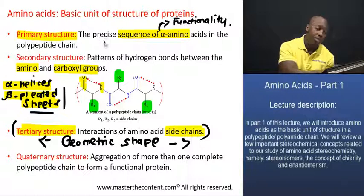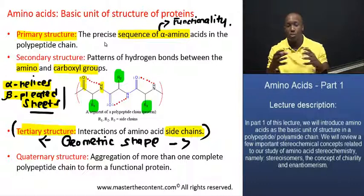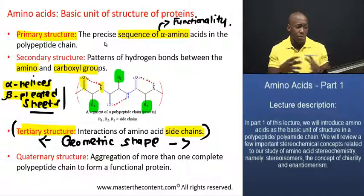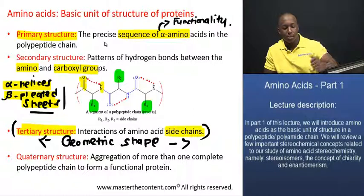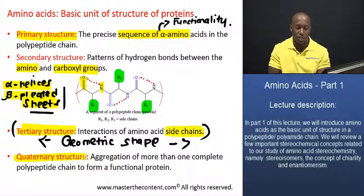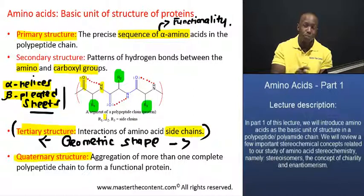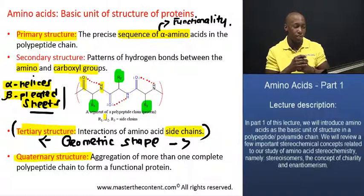As far as the quaternary level of structure is concerned, that basically results when you have more than one protein coming together, aggregating and conforming together to form another complete functional protein. What I want to mention is that at any one of these levels of structural organization, you might have a completely functional protein — not every single protein has to achieve the quaternary level of organization to be functional.